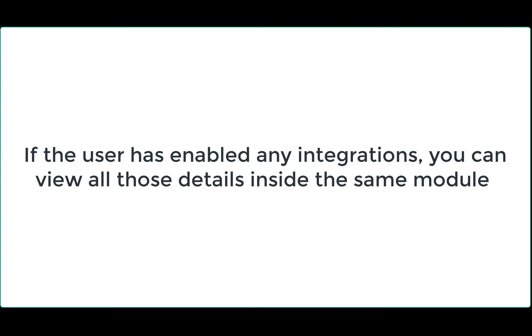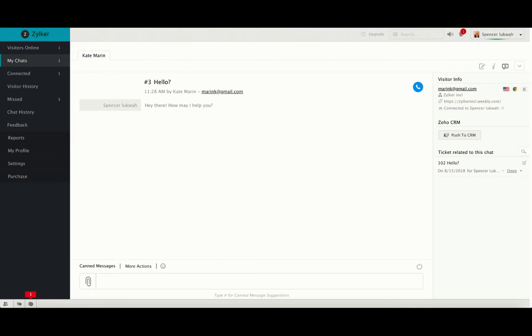In case the visitor has enabled integrations, for example like with Zoho CRM, you will be able to see the details on the right hand side of the window.